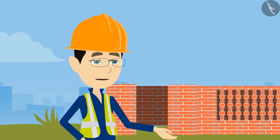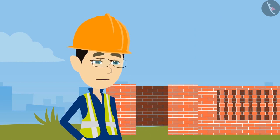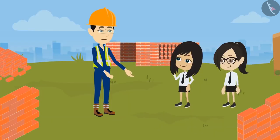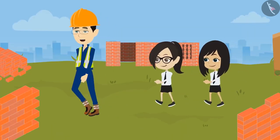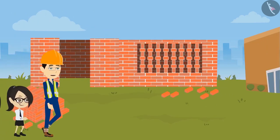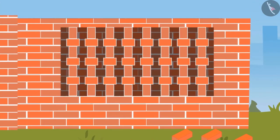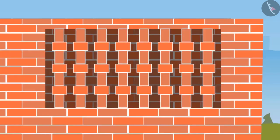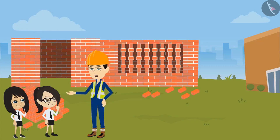Sir, where else do you use the brick pattern? We can also make vents using bricks. What is a vent? The gaps that are left in the wall for air circulation are called vents. See, we have also made some vents in your canteen wall. You can see many similar vents in buildings. I have made a pattern in this vent. Similarly, you can see very beautiful patterns in the vents of buildings.